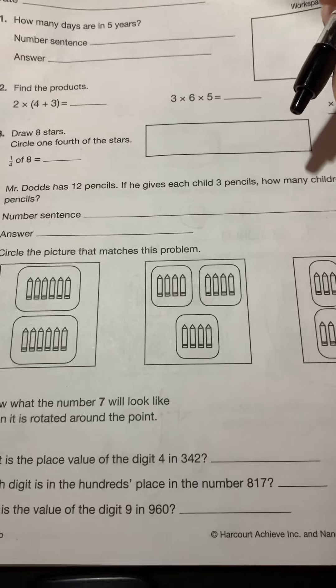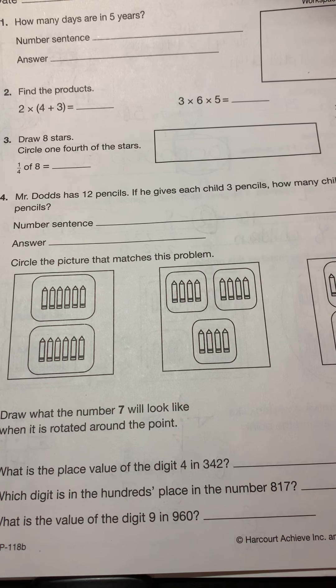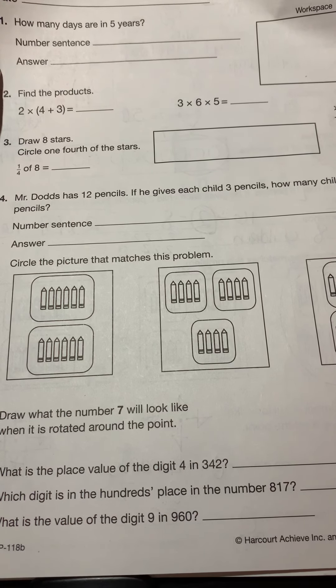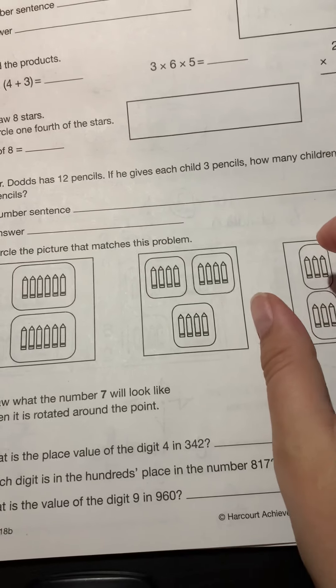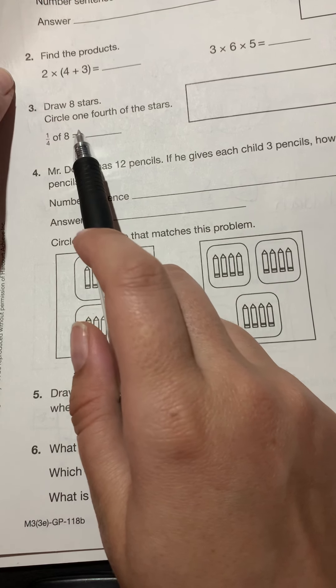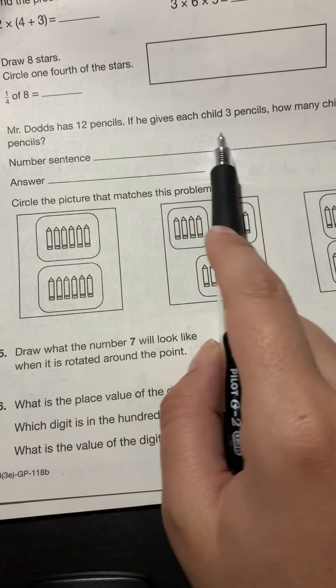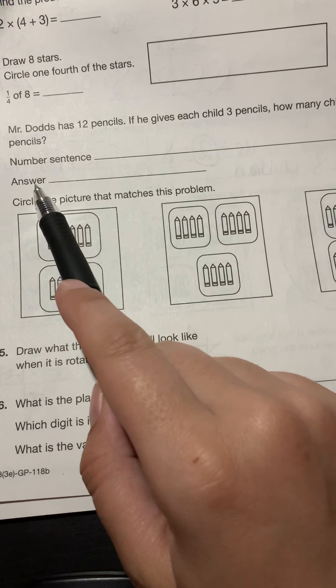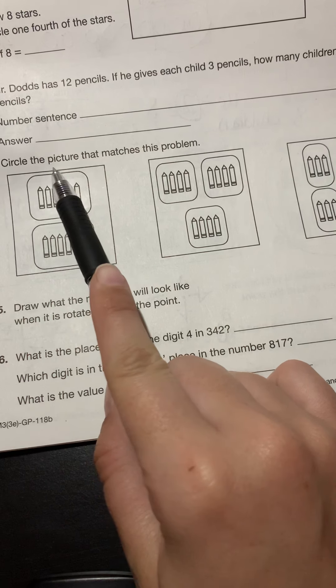Let's take a look at what you're going to be doing for homework. So how many days are in five years? Notice if it's five years, are you going to have to add an extra day? Yes. There's a leap year every four years. So in five years, there would still be one leap year. So you can do this the same way we did on the front, adding the one to the problem. How about the next one? Find the products. Remember, we're going to start with the number in parentheses before we multiply. And then you can use colored pencils if you want to, to do this one here. Draw eight stars, circle one fourth of the stars and write the answer here. How many did you circle? Number four, Mr. Dodds has 12 pencils. If he gives each child three pencils, how many children will get pencils? You need a number sentence and an answer. You need to bracket and underline your question. Then we're still doing number four. It says circle the picture that matches this problem.